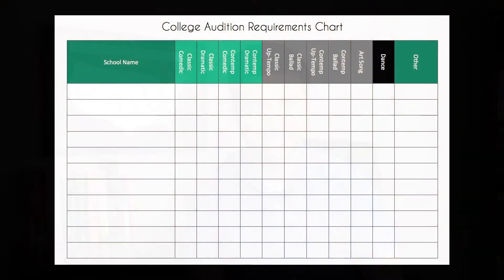It's also going to allow you to see what tapes you can use for multiple schools, which will save you time in your filming process. If you'd like to use the requirement sheet that I created — which you're seeing on your screen — you can download it by clicking the link in the description below. Once you've figured out exactly what your requirements are, this is where you want to start choosing your material.